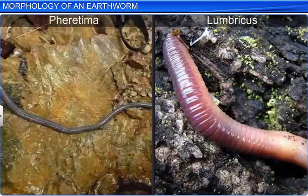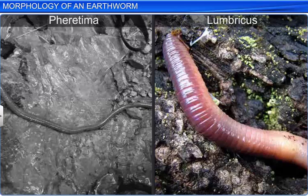In India, there are two common species of earthworms — Pheretima and Lumbricus — which measure 10 to 15 centimeters in length.